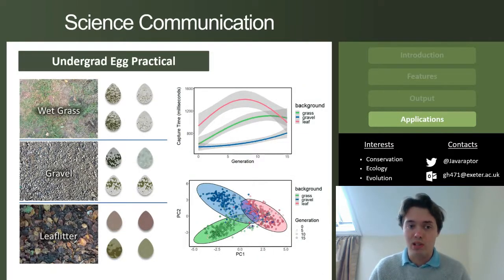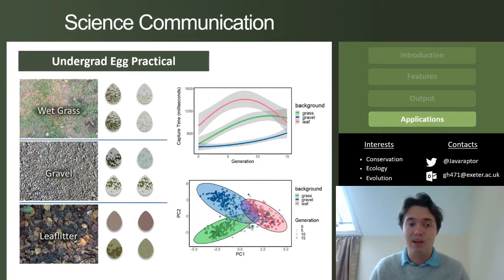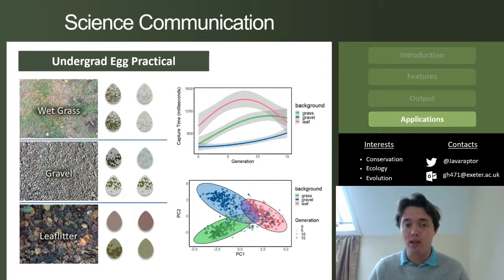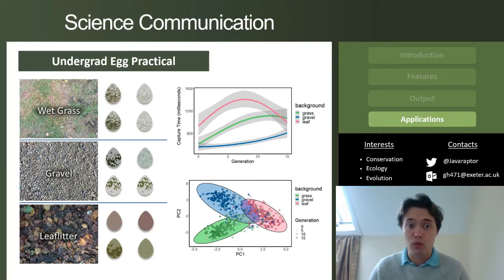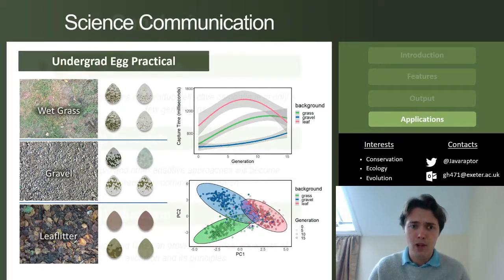But it doesn't just have applications for research — we've also used it as a potential outreach tool by developing a practical which we ran last autumn, where we allowed students to come up with their own hypotheses about how backgrounds would influence camouflage evolution, and we gave them sample code to run their own analyses. This will also be available with the toolbox once it's published.